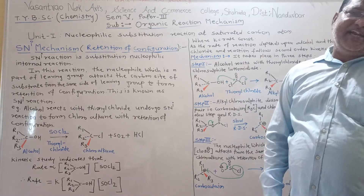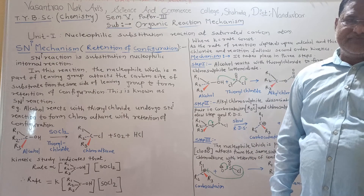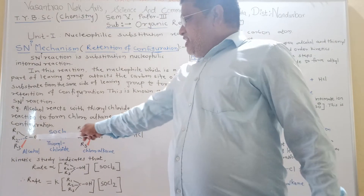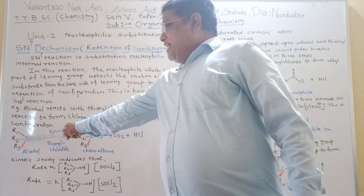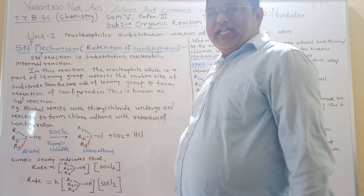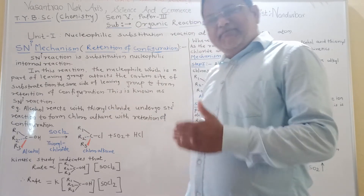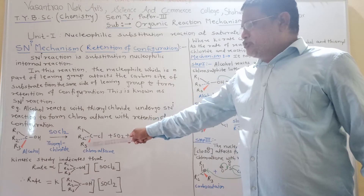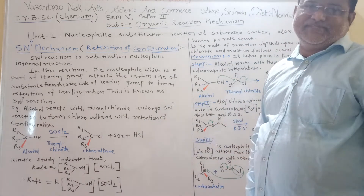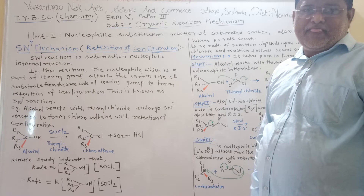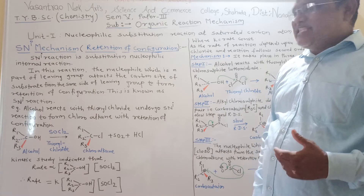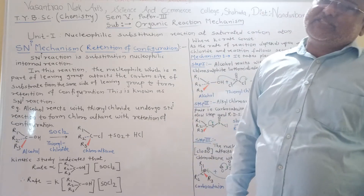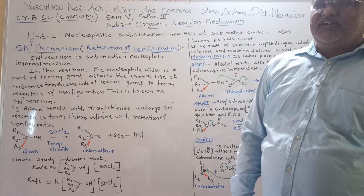What is meant by retention of configuration? In the reactant, all alkyl groups are on the left-hand side of the carbon atom. Similarly, in the product, the alkyl groups are also on the left-hand side — meaning we get the same configuration in the product. So it is called retention of configuration.